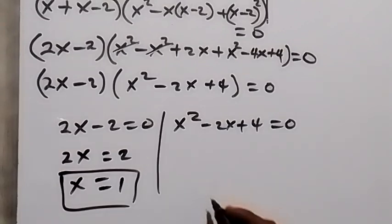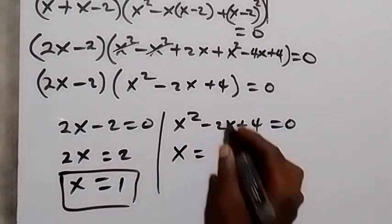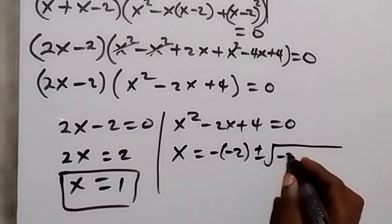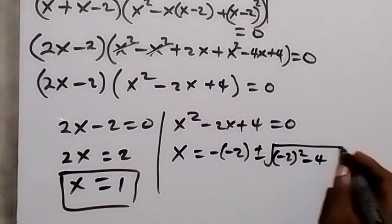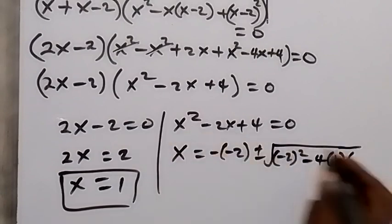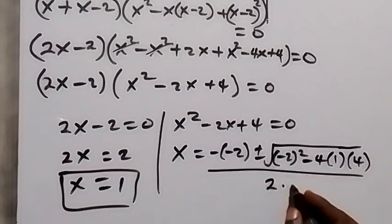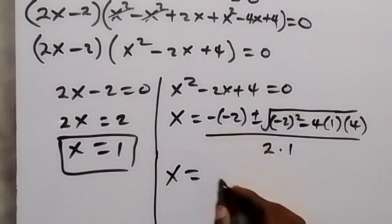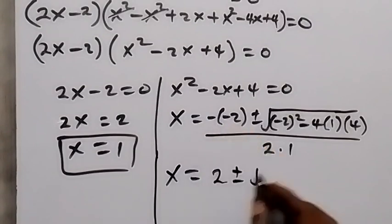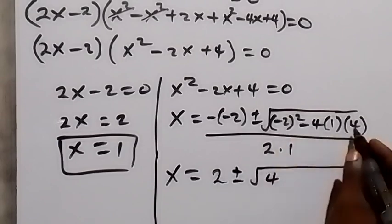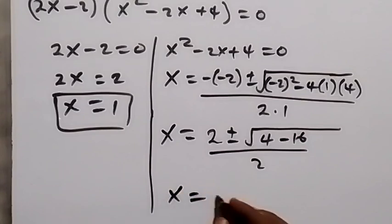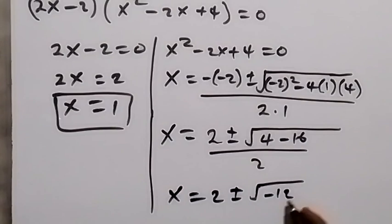That is one value of x. From x squared minus 2x plus 4 equals 0, we use the quadratic formula: x equals minus b — and b is minus 2, so minus times minus 2 — plus or minus square root of b squared, that is minus 2 squared, minus 4 times a, a is 1, times c, c is 4, over 2 times a. This gives x equals 2 plus or minus square root of 4 minus 16, over 2.